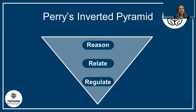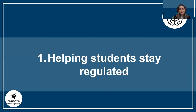If you look at this inverted pyramid, you can see we can draw a parallelism with the previous model — in the sense that the neocortex is in charge of abstract processing, then relate, the emotions part of regulating and calming down, and staying regulated with the brainstem, or primitive brain.